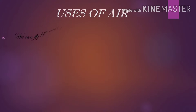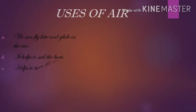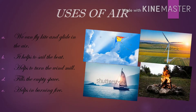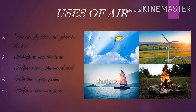Let us now study the uses of air. Number A: we can fly a kite and glide in the air. Number B: it helps to sail the boat. Number C: it helps to turn the windmill. Number D: it fills the empty space. Number E: it helps in burning.